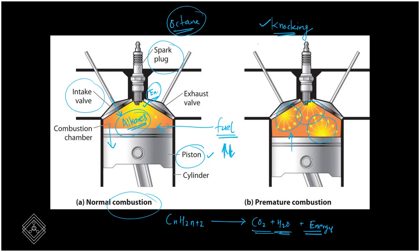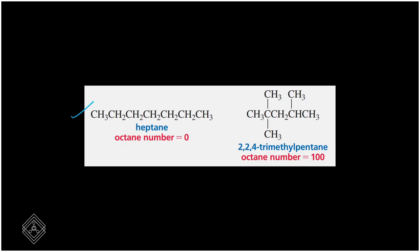What is the logic behind octane numbers? We use two reference compounds. For example, we have heptane, which has 7 carbons. When we compare combustion resistance, heptane has zero resistance.